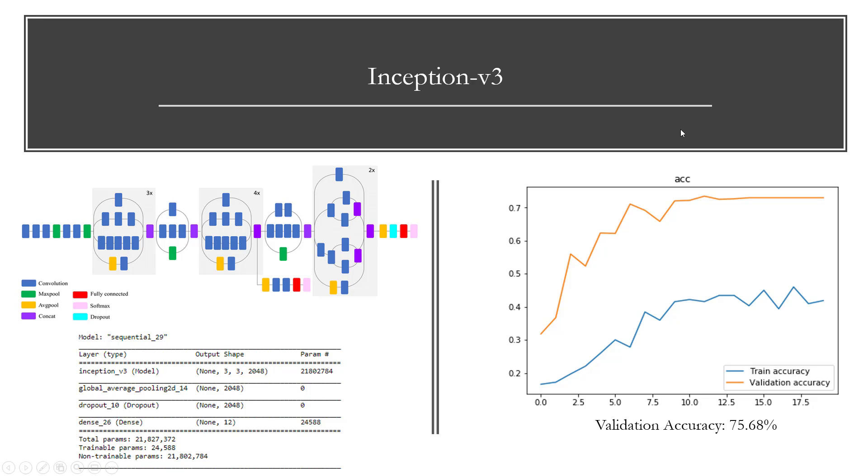The Inception V3 performed the best out of all the algorithms. As you can see here, the validation accuracy goes up to around 75.68%, which is higher than any of the other neural networks I trained. Very interestingly, the plot shows that the validation accuracy is significantly better than the training accuracy. A possible reason for that is that Inception V3 relies heavily on dropouts and other regularization techniques.